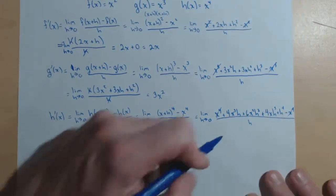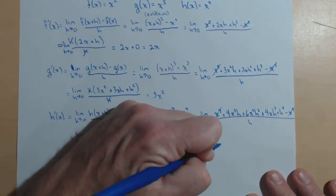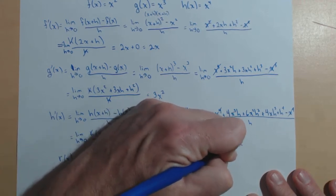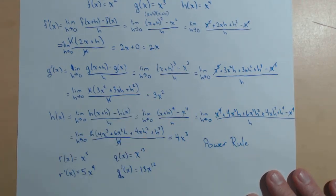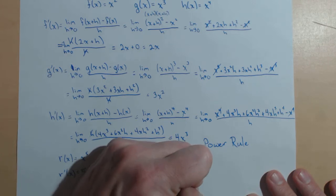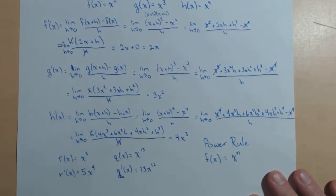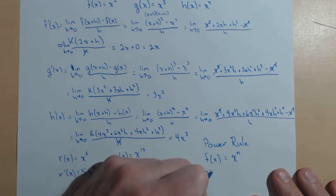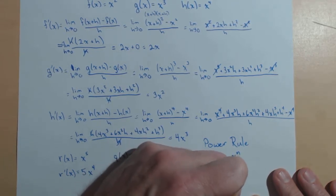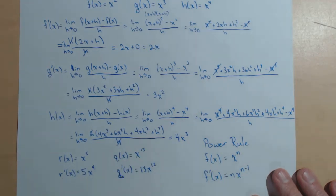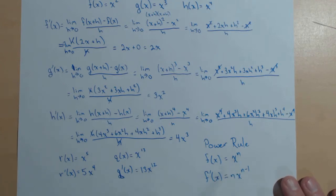So what we have now is what's called the power rule. That's going to be the generalization of this pattern we see going on. And that is: if f of x equals x to the n, f prime of x equals n times x to the n minus 1. And this will work not just for integer values of n, but any real number for n if we have a power function.